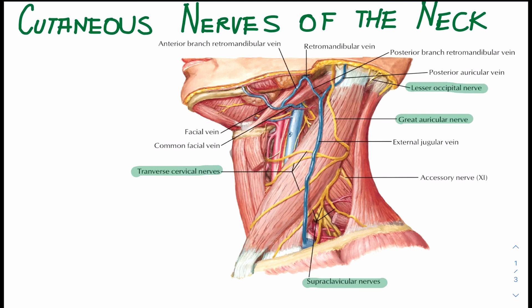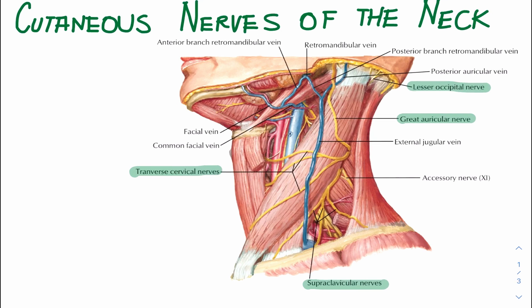Now we'll study cutaneous innervation to the skin on the front and sides of the neck. The skin of the front and sides of the neck is supplied by anterior rami of cervical nerves 2 to 4 through branches of the cervical plexus. The branches emerge from beneath the posterior border of the sternocleidomastoid muscle. The nerves are the lesser occipital nerve, the great auricular nerve, the transverse cutaneous nerve, and the supraclavicular nerves.